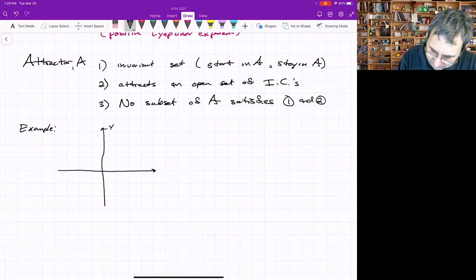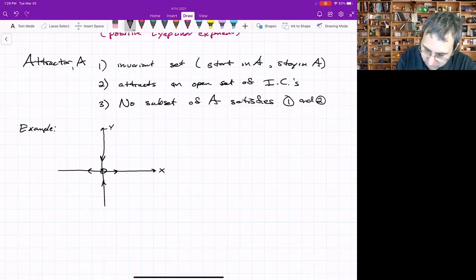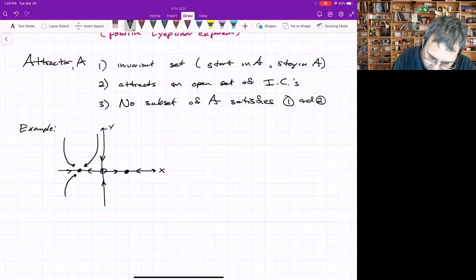I'll just draw the picture of it. The y-axis and the x-axis. The origin is a saddle. Along the y-axis, things are coming in. Along the x-axis, things are going out. But then they're going to stable points. These are stable nodes.